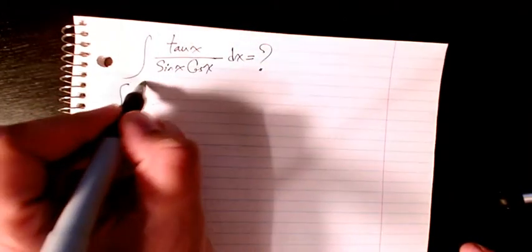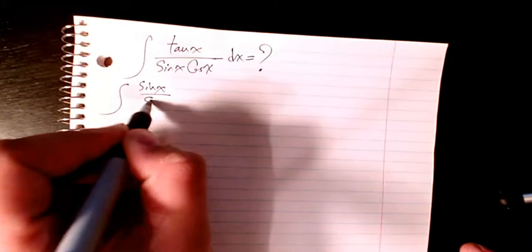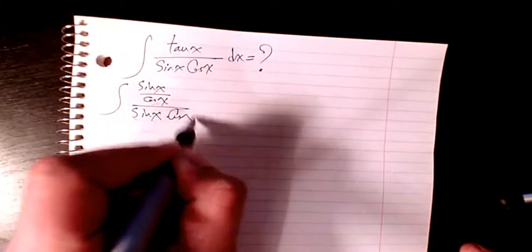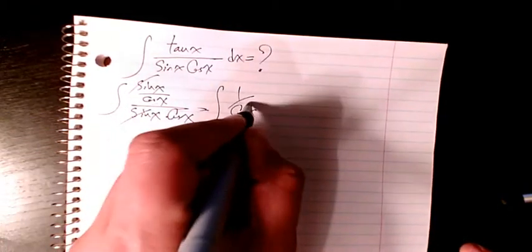So tan x is sine x divided by cosine x, divided by sine x times cosine x. The sine and sine cancel out, and it will be 1 over cosine squared x dx.